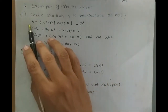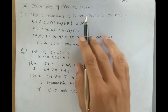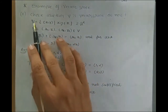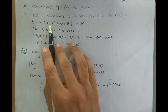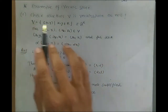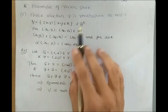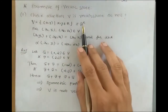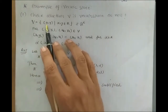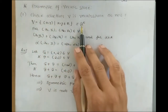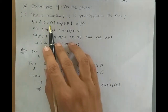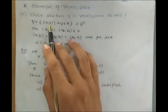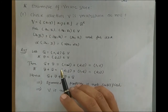The first example is: check whether V is a vector space or not. V is equal to the set of all ordered pairs (x, y) where x, y belong to R. So V is R² space. If there were three components (x, y, z) it would be R³ space. If it is an N-tuple then it is called Rⁿ space.